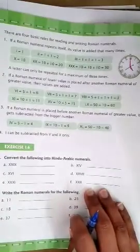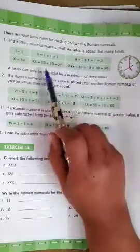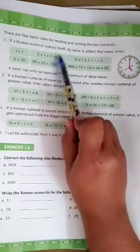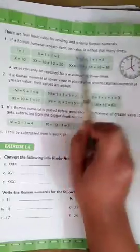We have 4 basic rules for reading and writing the Roman numeral. First one is, if a Roman numeral repeats itself, its value is added that many times. For example, here is 1, 1 is equal to this symbol.